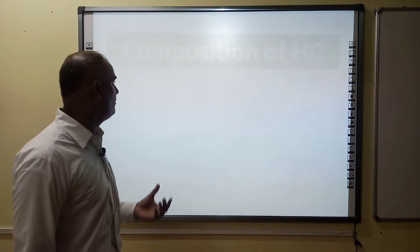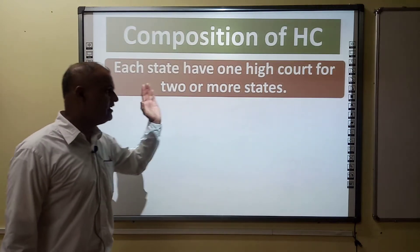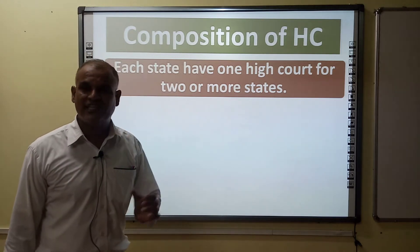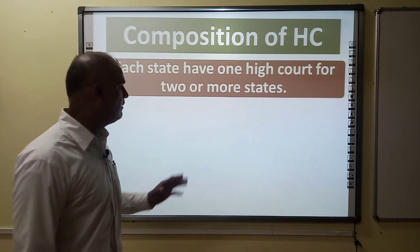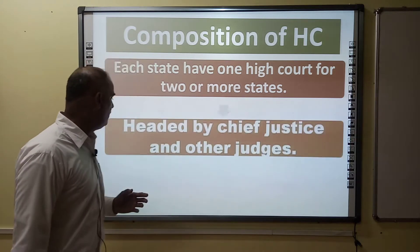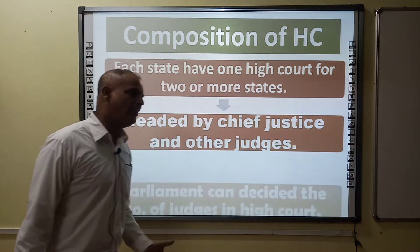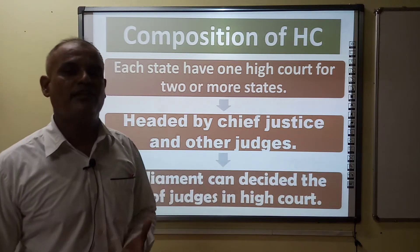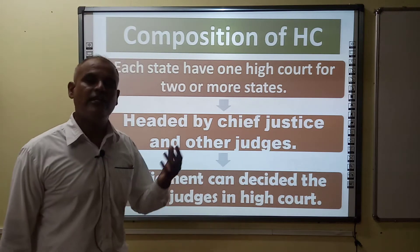The first step is the composition of the High Court. Some states have one High Court for two or more states — this is called a joint High Court. For example, the Chandigarh High Court serves Punjab and Haryana. Each High Court has one Chief Justice and other judges, and Parliament can decide the number of judges in a High Court — whether to increase or decrease them. This is within the authority of the Indian Parliament.